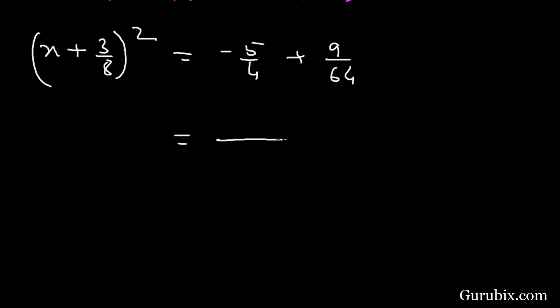If we add these values then we have 64. If we divide 64 by 4 then we have 16. 16 times 5 is minus 80. Here we have positive 9 then it becomes minus 71 over 64.